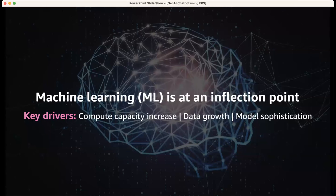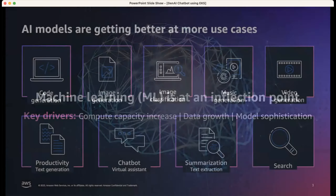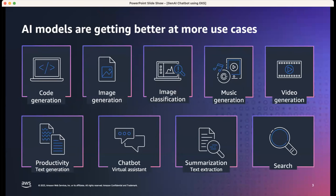Working with customers throughout the industry, machine learning is going through an inflection point driven by a few things: compute capacity is increasing, data sizes are growing, and the models themselves are becoming more sophisticated — both in terms of architecture and the use cases they can support. As a result, these models are getting better at code generation, image generation, music generation, text analysis, and text summarization.